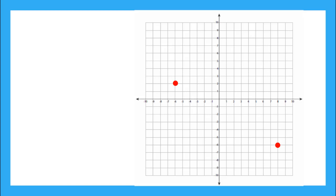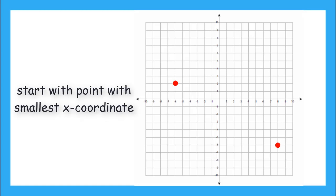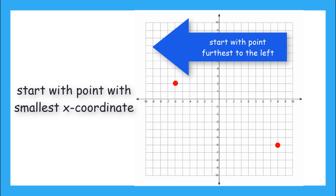What is the rise and the run between these two points? This means we need to find the change in the y-coordinate and the change in the x-coordinate between these two points. To do this, we always start with the point with the smallest x-coordinate — that is the same as saying, always start with the point that is furthest to the left on the coordinate plane.